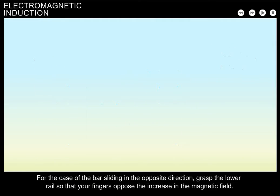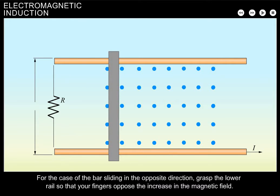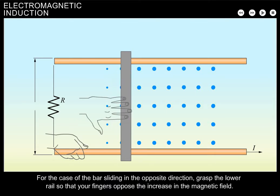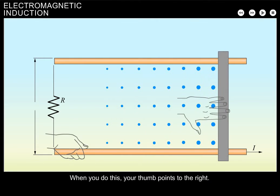For the case of the bar sliding in the opposite direction, grasp the lower rail so that your fingers oppose the increase in the magnetic field. When you do this, your thumb points to the right. Therefore, the induced current travels clockwise.